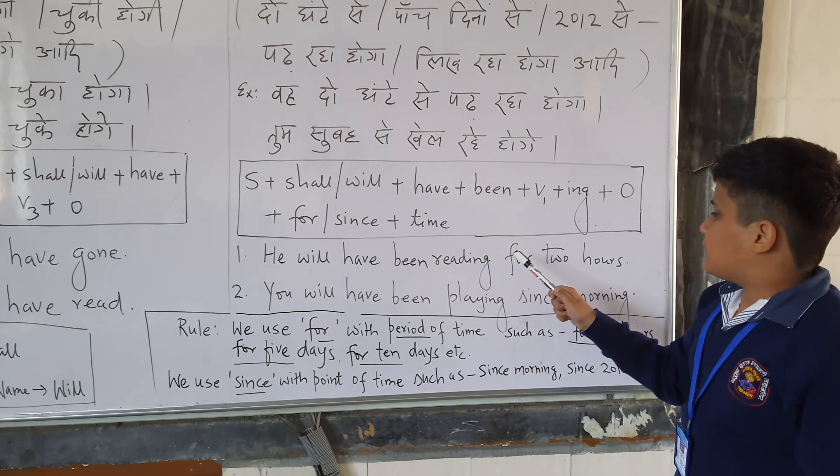The second tense is Future Perfect Continuous Tense. The formula is: Subject plus shall/will plus have plus been plus verb plus form plus ING plus object plus for/since plus time.